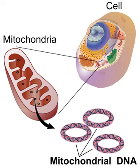During embryogenesis, replication of mtDNA is strictly down-regulated from the fertilized oocyte through the preimplantation embryo. The resulting reduction in per-cell copy number of mtDNA plays a role in the mitochondrial bottleneck, exploiting cell-to-cell variability to ameliorate the inheritance of damaging mutations. At the blastocyst stage, the onset of mtDNA replication is specific to the cells of the trophectoderm. In contrast, the cells of the inner cell mass restrict mtDNA replication until they receive the signals to differentiate to specific cell types.